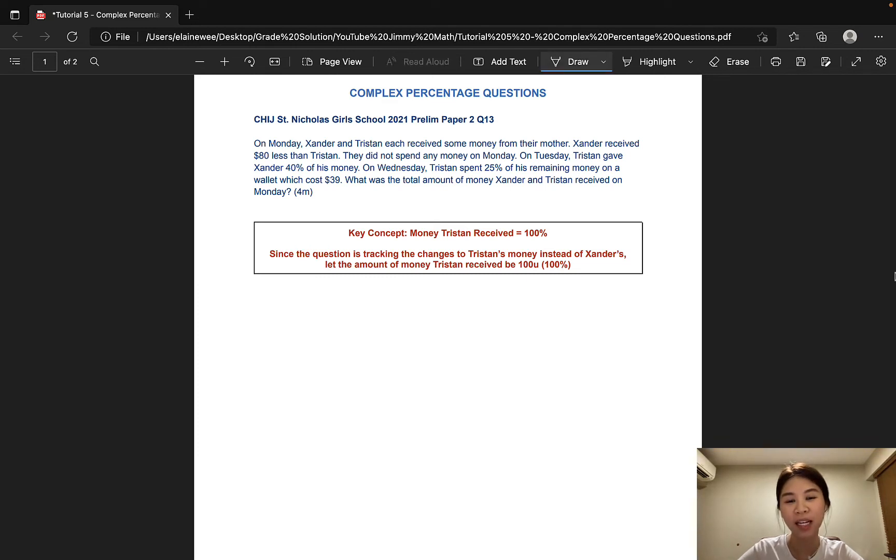The first question is taken from St Nicholas Girls School and it is worth 4 marks. On Monday, Xander and Tristan each received some money from their mother. Xander received $80 less than Tristan. They did not spend any money on Monday. On Tuesday, Tristan gave Xander 40% of his money. On Wednesday, Tristan spent 25% of his remaining money on a wallet which cost $39. What was the total amount of money Xander and Tristan received on Monday?